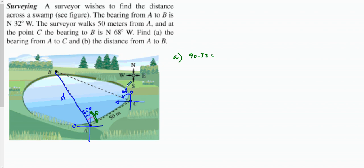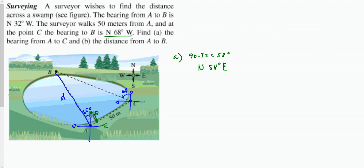90 minus 32 equals 58 degrees. We have to write it in compass notation: North 58 degrees East, because we're going to the right — East. So North 58 degrees East is one way we could write this bearing.